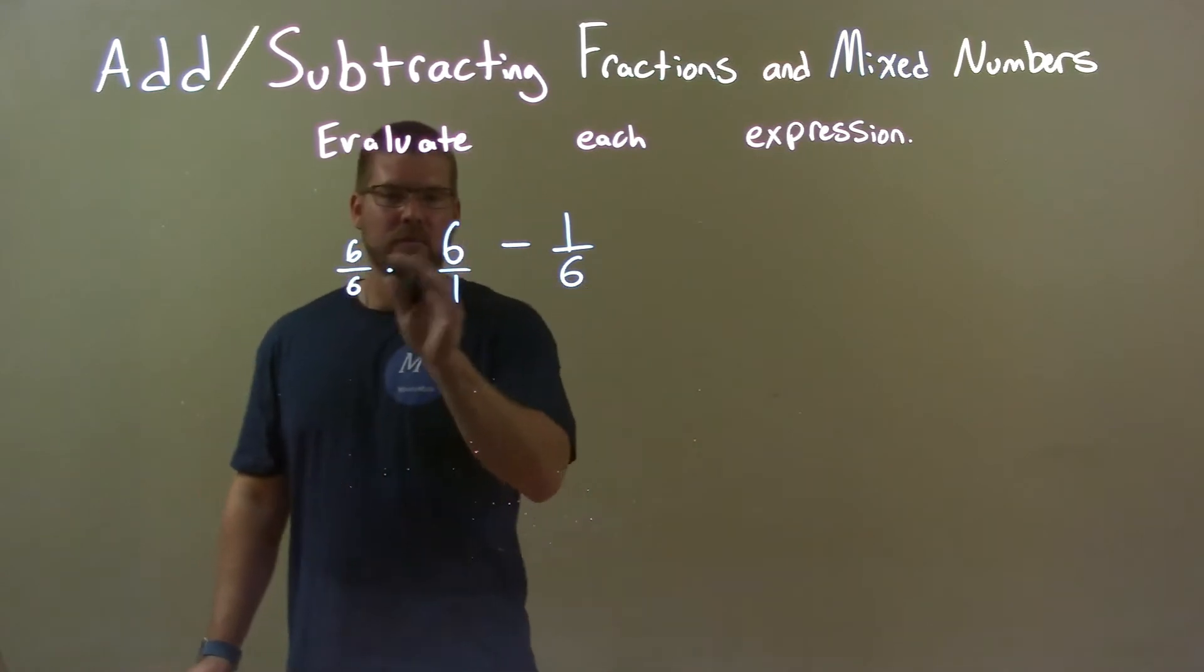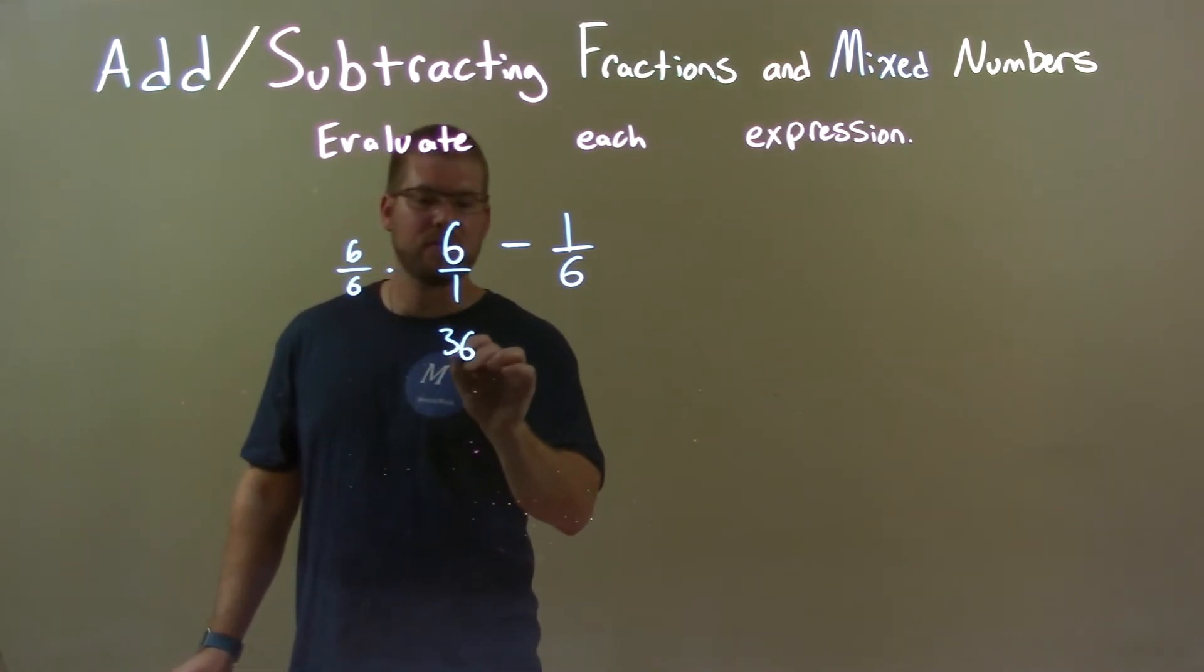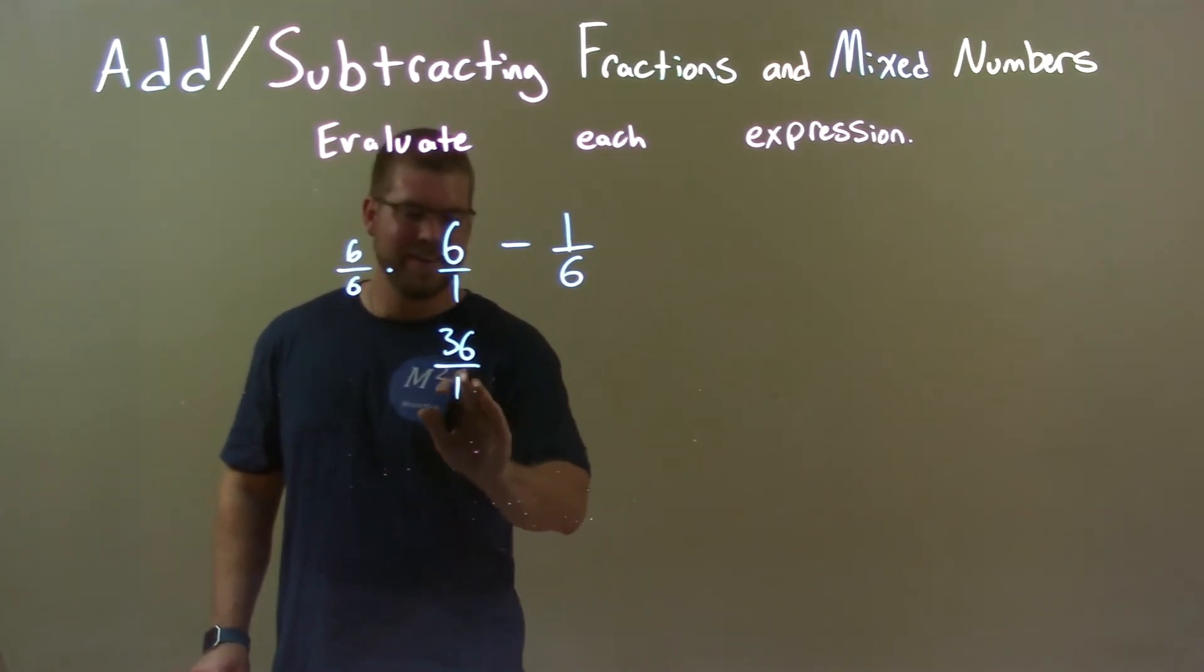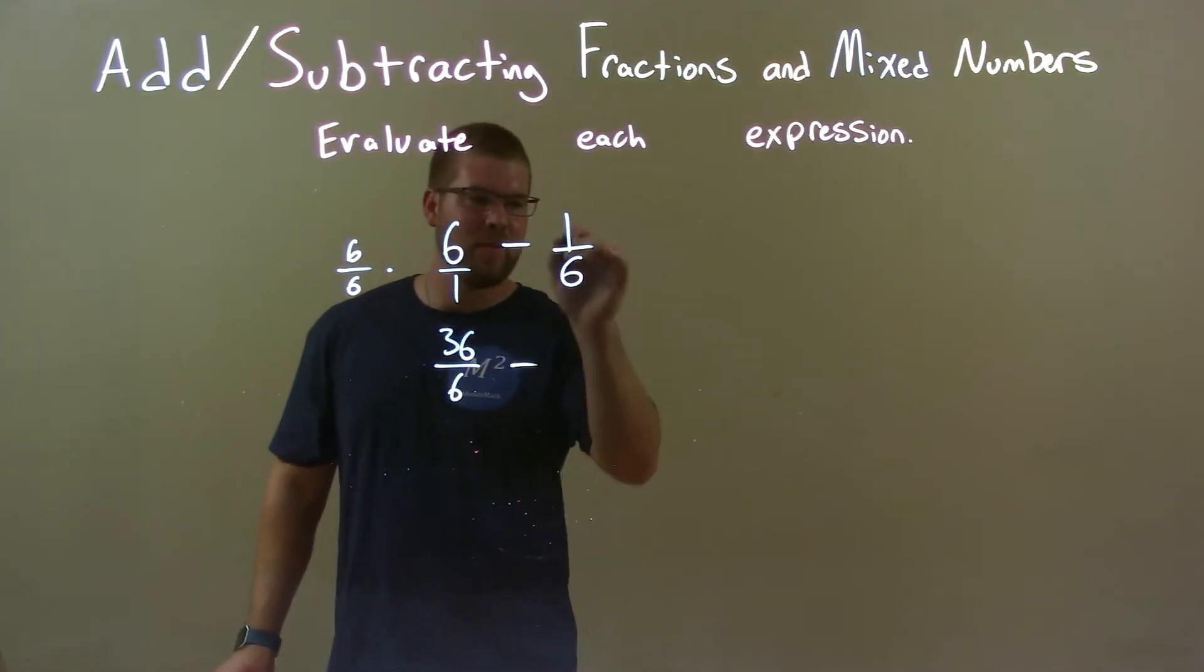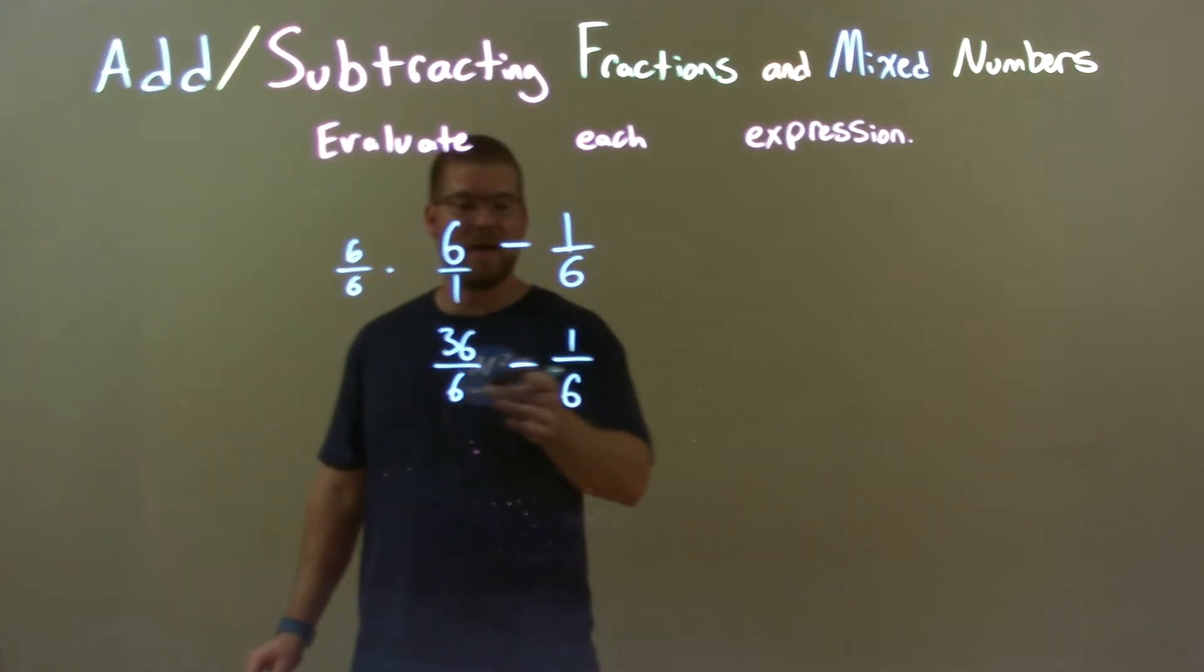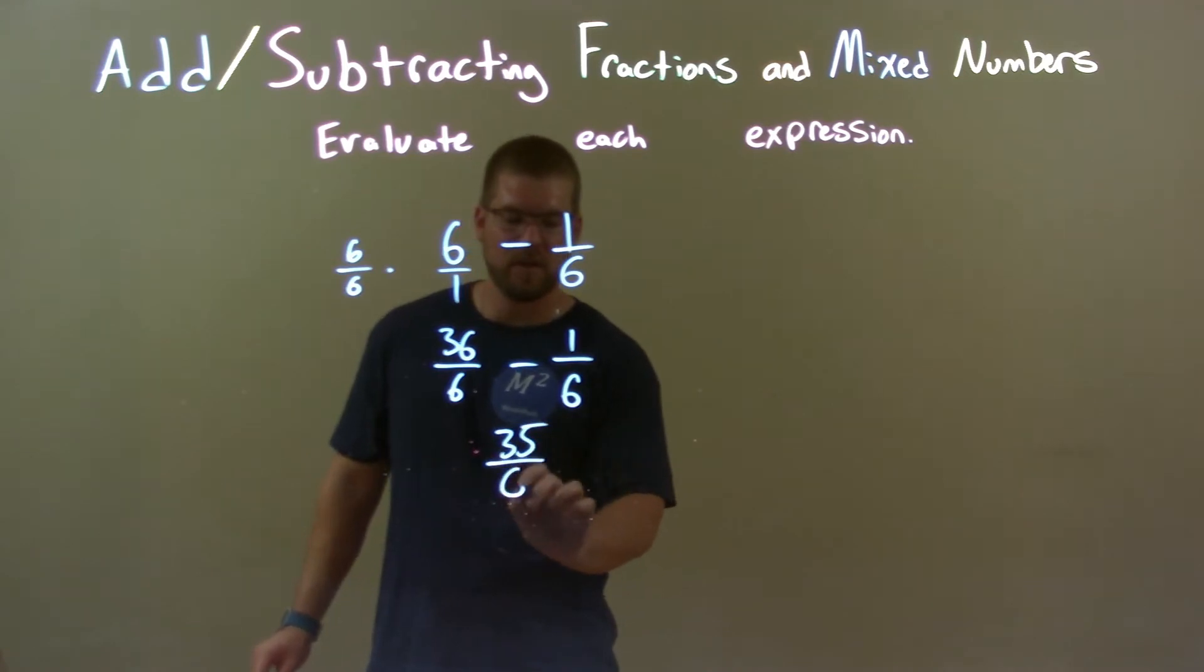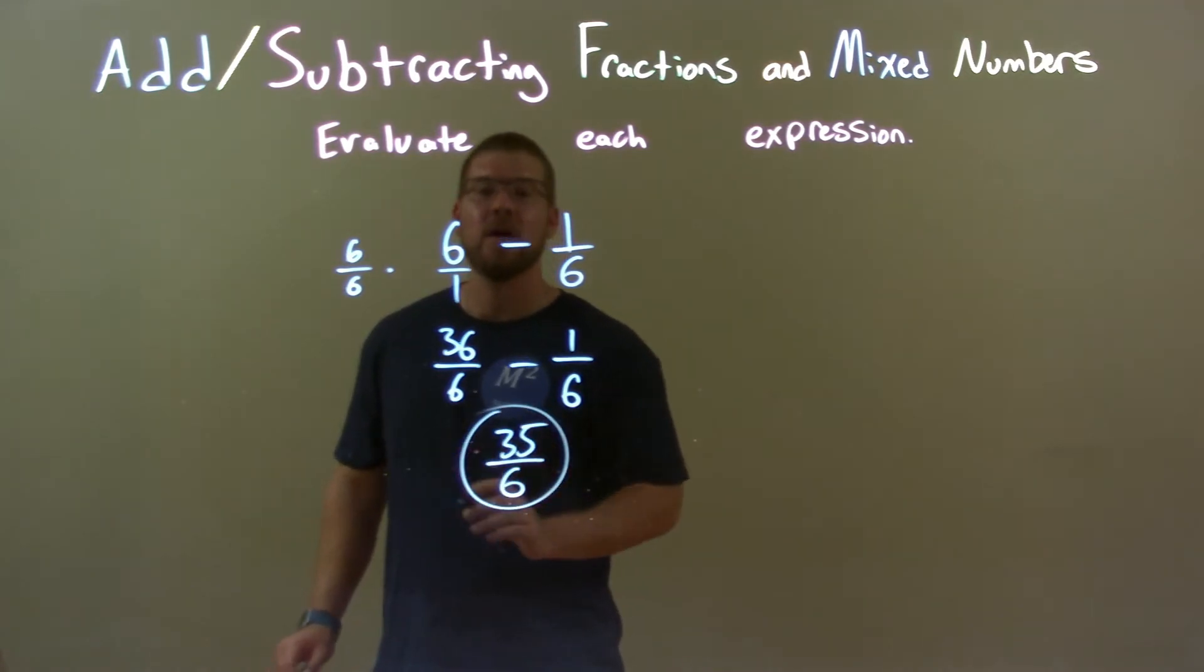But what it does do is it adapts 6 over 1 to be, well, 6 times 6 is 36, 6 times 1 is 6. We're going to bring down this 1 sixth right here, and now we're subtracting. They have the same base, that was our goal. So we just subtract the numerator. 36 minus 1 is 35. So we have 35 over 6, and there we have our final answer.